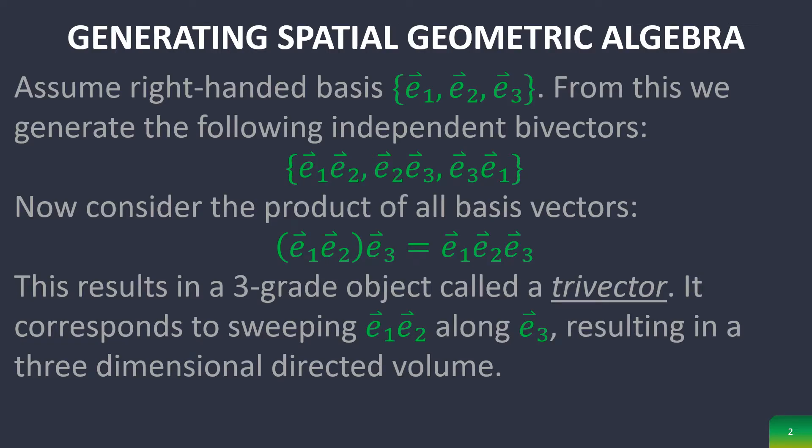we need to assume the right-handed vector basis E1, E2, and E3. We can generate the following independent bivectors, which also form a basis,